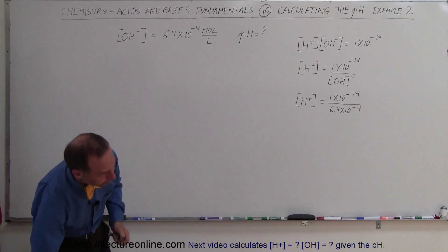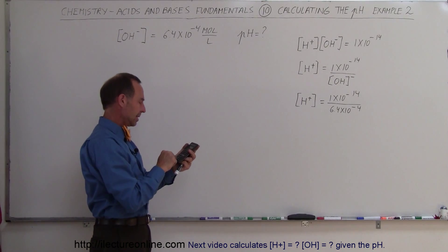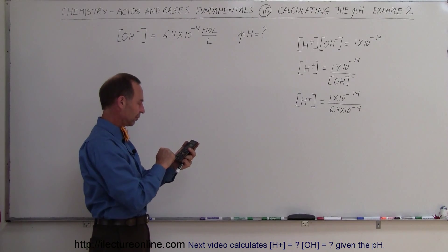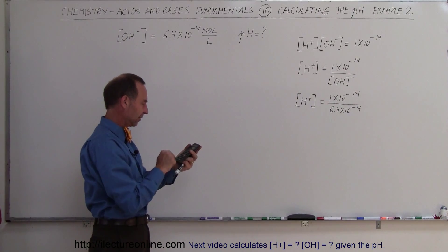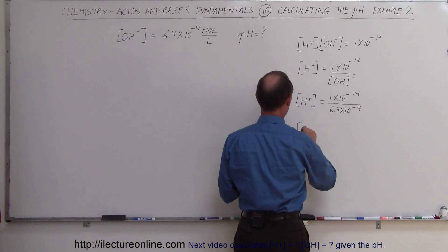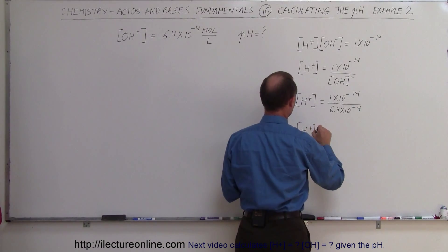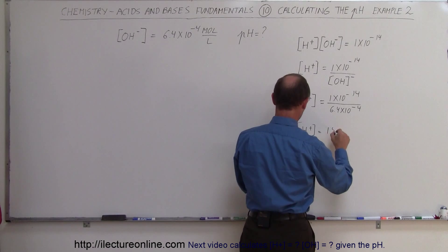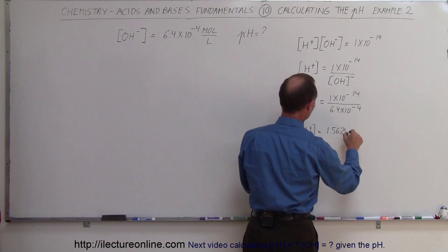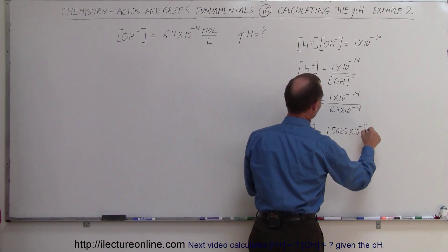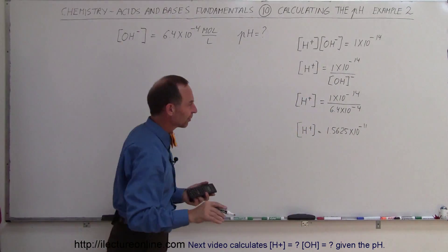Now we need a calculator. So 1e to the 14 minus divided by 6.4e to the 4 minus, and we get the concentration of the hydrogen ion to be 1.5625 times 10 to the minus 11. We don't need all those significant figures, but that's good enough.